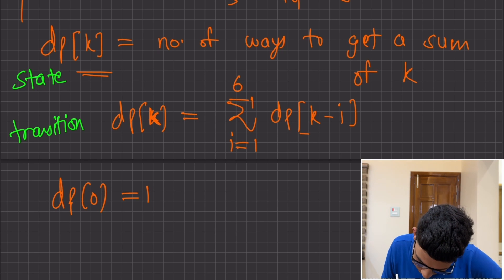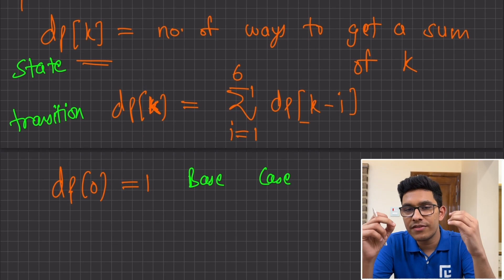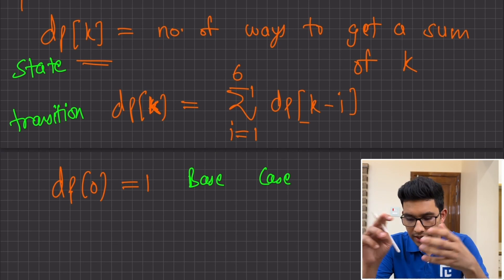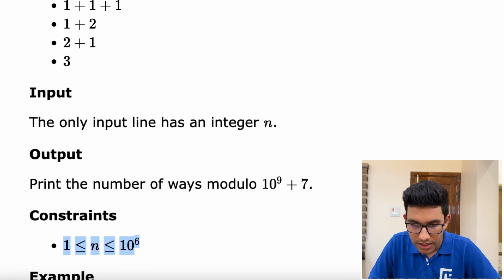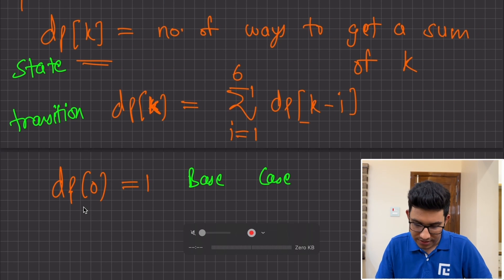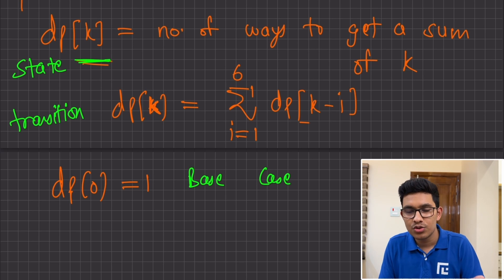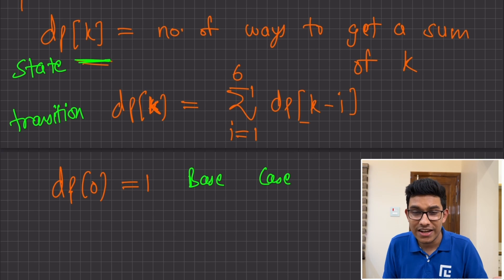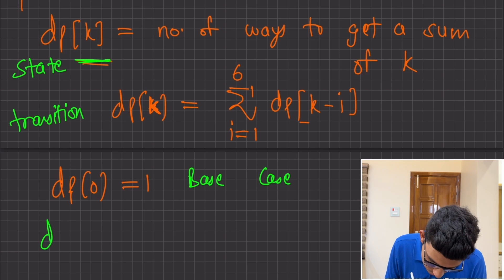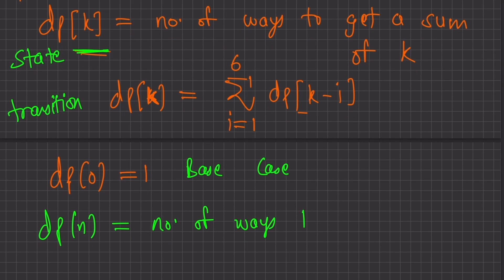And finally, what was the biggest problem we were trying to solve? In the problem statement, we have an integer n and we want to find out the number of ways to construct this integer n. Looking at our state — dp of k equals number of ways to get a sum of k — if you want to get a sum of n, then dp of n defines it. So dp of n is our final sub-problem.